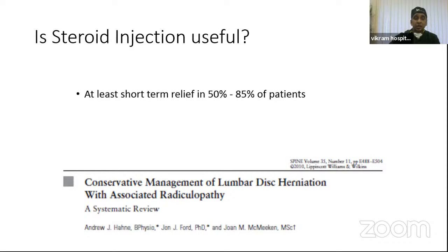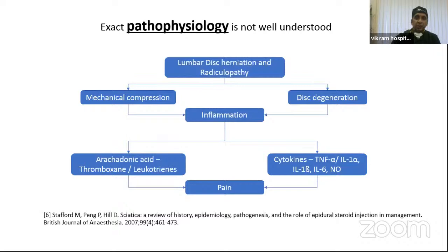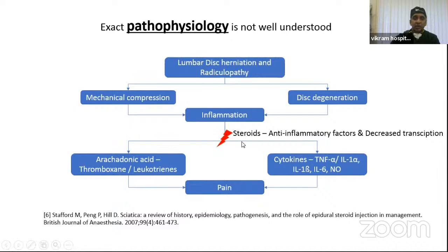Is it really useful? It has found, at minimum, short-term pain relief — 50 to 85% of patients have been found to have pain relief. The pathophysiology is not fully understood, but we know there is a mechanical component, inflammation, and a degenerative component. Steroids work at the inflammation component — they have an anti-inflammatory effect, blocking the arachidonic acid pathway, and blocking cytokines, TNF-alpha, and interleukins which are released in the vicinity of the nerve roots, thus giving pain relief.